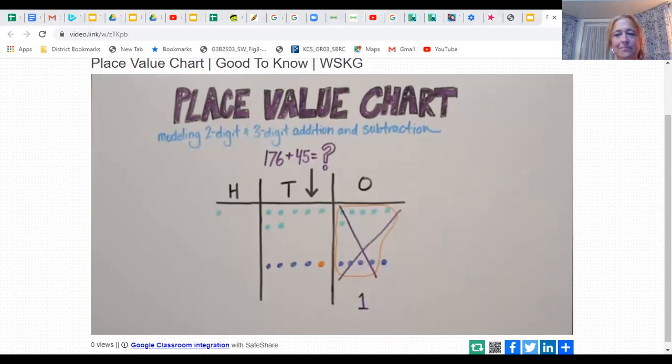Next, we add the tens. Seven tens plus five tens is 12 tens. So we bundle again. A bundle of 10 tens make 100. How many tens are left? Two. Last, we add the hundreds. 100, 200. There are two hundreds. Do we need to make a bundle? Nope.